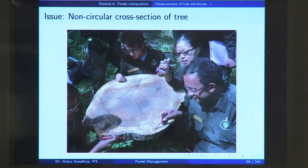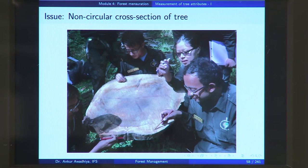For a non-circular cross section, you may take measurements at a number of different points and take the average, or take measurements at two points that are 90 degrees to each other and take the average, or you may even go for just a single measurement. These things are not that well defined.